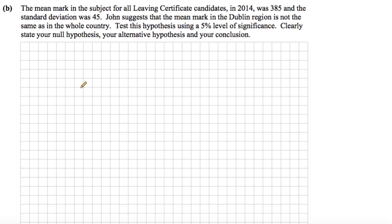So part B says the mean mark in the subject for all Leaving Certificate candidates in 2014 was 385 and the standard deviation was 45. John suggests that the mean mark in the Dublin region is not the same as the whole country. Test this hypothesis using a 5% level of significance and clearly state your null hypothesis, your alternative hypothesis and your conclusion.